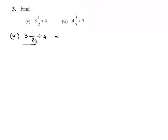3 and 1/2 can be written as 3 times 2 plus 1, that is 7 upon 2, divided by 4.